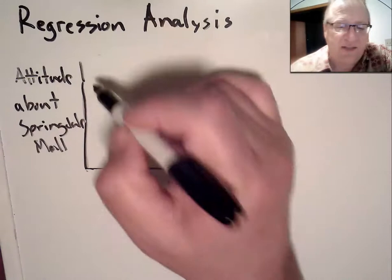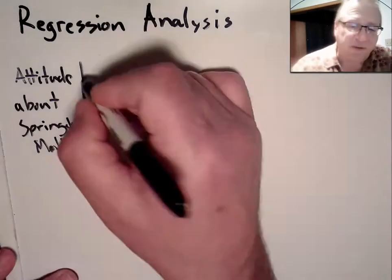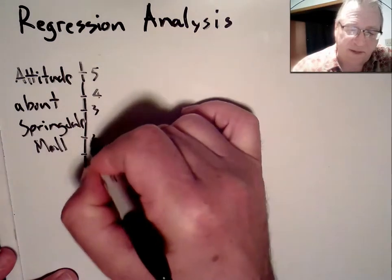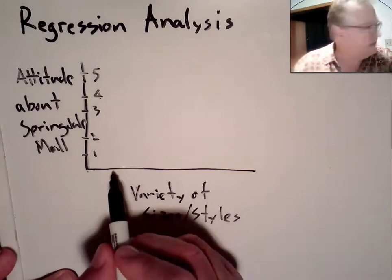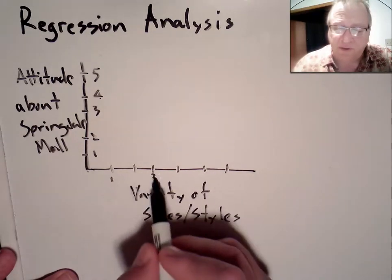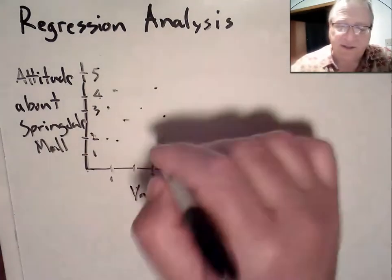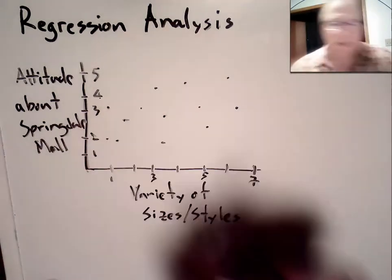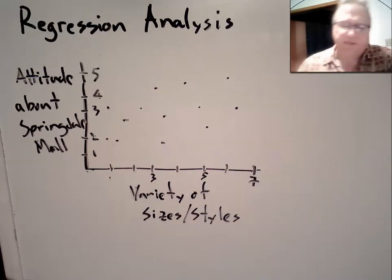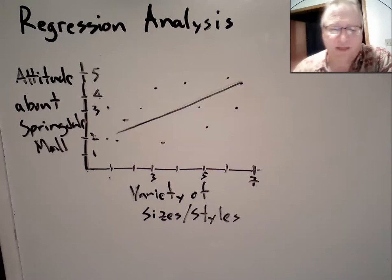But I'm actually going to demonstrate the downtown mall — kind of the forgotten middle-child mall — and look at the attitude about downtown versus sales staff helpfulness and friendliness. Attitude about the mall was rated one to five, and helpful friendly staff was rated one to seven. I'm going to jump to Excel now. We'll let the computer calculate the regression line and tell us whether the slope is equal to zero, which is our null hypothesis, by looking at the p-value.